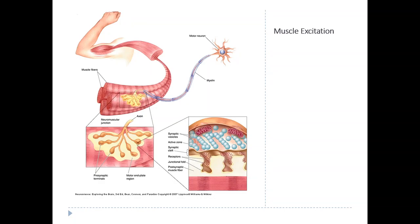Motor neurons control muscle fibers, working by exciting them pretty much the same way that one neuron excites or activates another neuron within the nervous system. The motor neurons release their neurotransmitter at the synapse called the neuromuscular junction. The neurotransmitter that all motor neurons use is called acetylcholine, which also appears in the brain as a neurotransmitter between neurons, but it's also what motor neurons use to activate muscles.